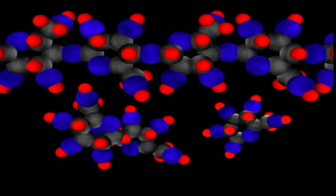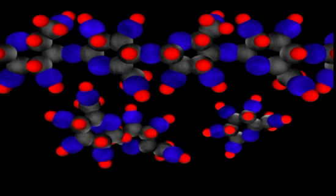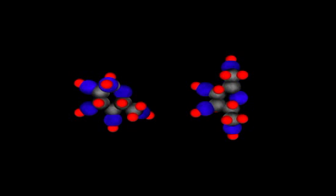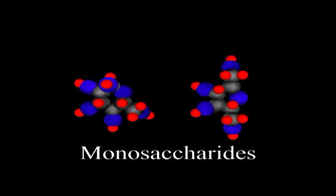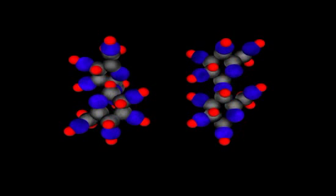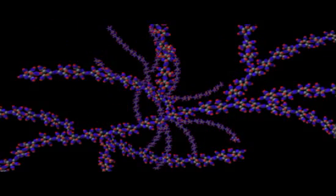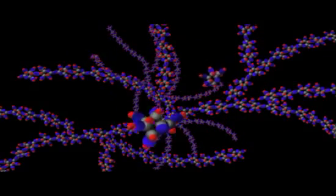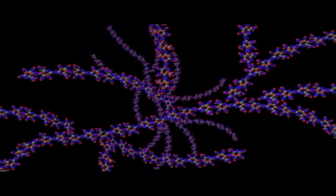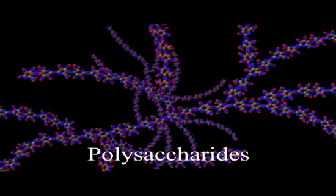Carbohydrates fall into one of three categories depending on the number of sugars they contain. Carbohydrates such as glucose or fructose that consist of a single sugar monomer are called monosaccharides. Sucrose, lactose, and other carbohydrates that contain two sugar monomers are called disaccharides. Starch, glycogen, cellulose, and other carbohydrates made out of long chains of sugars are called polysaccharides.